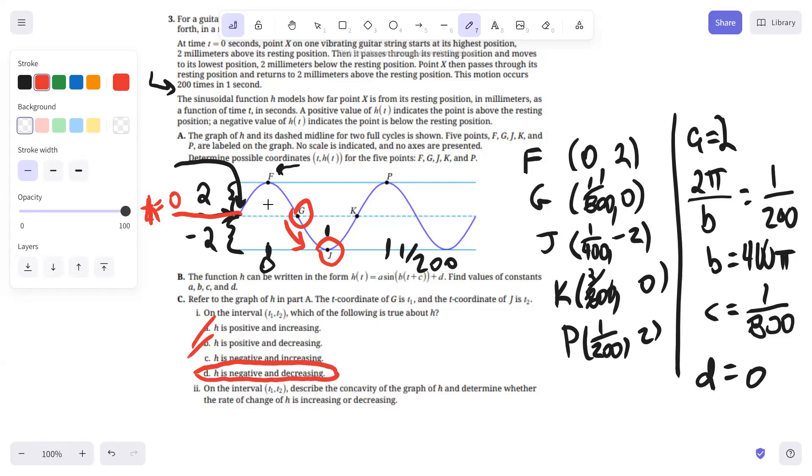In the second part of C, on the interval T1 to T2, describe the concavity of the graph of H and determine whether the rate of change of H is increasing or decreasing. So the concavity of the graph is concave up. I don't know if you know the rhyme, but concave up, graph looks like a cup. Concave down, the graph looks like a frown. So that has a cup shape on that interval. Since it's concave up, when a function is concave up, that means its rate of change is increasing, which creates the upward curvature on that interval. So we would write that out in a concise statement.